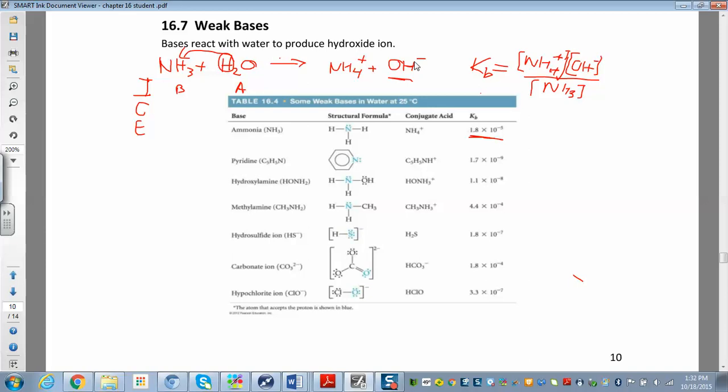When we have base ionization reactions, we're going to have ICE tables again. The only part that we're adding now is at equilibrium, you're going to solve for hydroxide ion concentration. And from that, you can find the pH. It's a little bit more involved than the weak base problem, just one extra step.